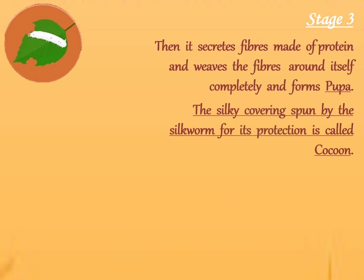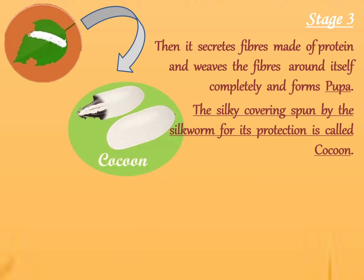Stage 3: The caterpillar secretes fibres made of protein and weaves the fibres around itself by moving its head in the pattern of a figure of eight. During these movements of the head, the silkworm secretes silk in liquid form through the tiny opening in its head.